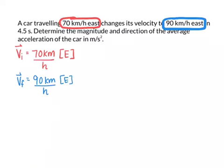And finally, we're given the time. We're told that this change takes 4.5 seconds, so time equals 4.5 seconds. Now, we need to find the change in velocity, but we also need our velocity to be in meters per second, because we're asked for acceleration in meters per second squared. So we're going to do this in a one-step process.